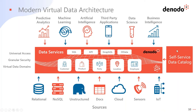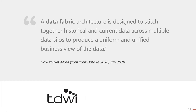An integral part of our platform is a self-service data catalog — a single place where any data scientist or business analyst can go, connect, and from a single screen see all data assets in the company, preview them, export if needed, trace lineage, and apply categorization and tagging. This architecture represents the concept of data fabric, designed to stitch together historical and current data across multiple data cells to produce a uniform, unified business view — as quoted by the Data Warehousing Institute in their latest review.